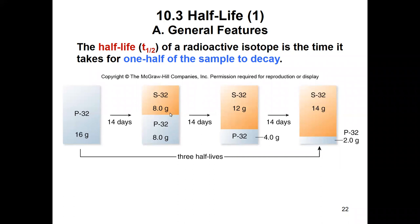And then we wait for another 14 days, and after another 14 days the 8 grams of phosphorus-32 have decayed — half of it has decayed to 4 grams of sulfur-32. So now we have 8 plus 4, 12 grams of sulfur-32, and only 4 grams of phosphorus-32 left.